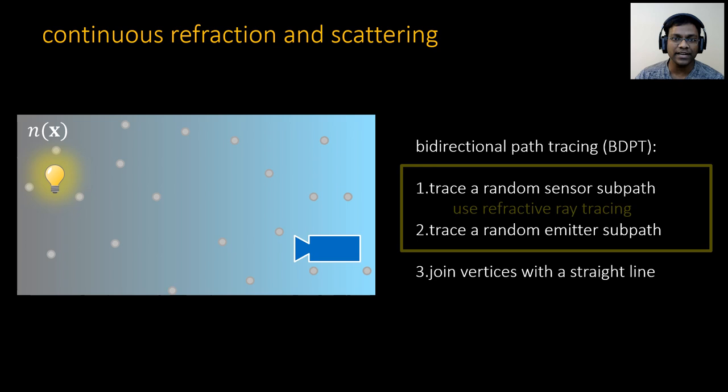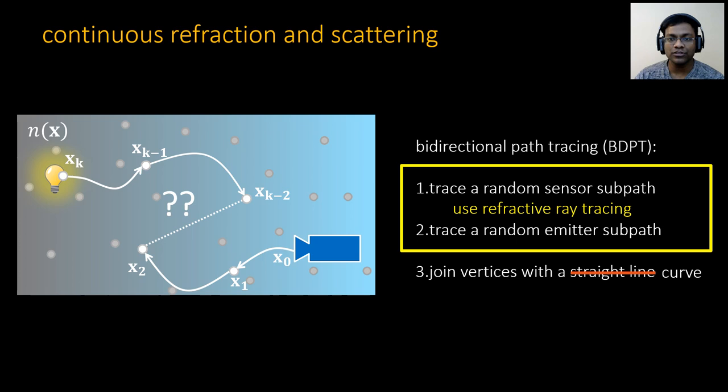If we have both continuous refraction and scattering, we can repeat the same steps and replace the straight line ray tracing with refractive ray tracing. However, the problem is we cannot join the source and sensor subpaths with a straight line. We have to find a curve to make this direct connection.